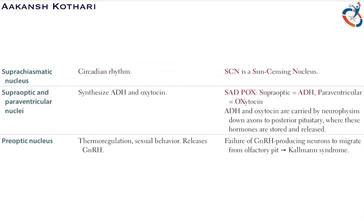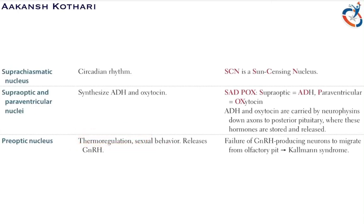The pre-optic nucleus is responsible for thermoregulation and sexual behavior, and is controlled by GnRH (gonadotropin-releasing hormone). If there is failure of GnRH-producing neurons to migrate from the olfactory pit, it can lead to Kallmann syndrome.